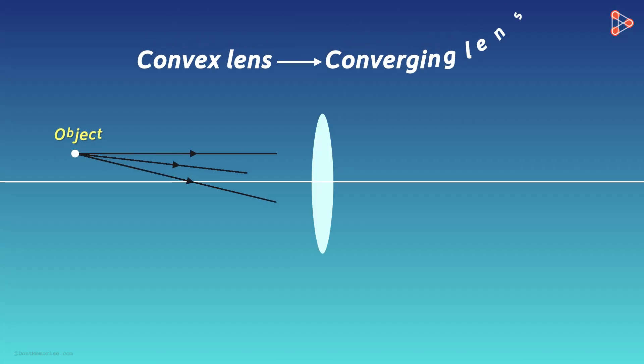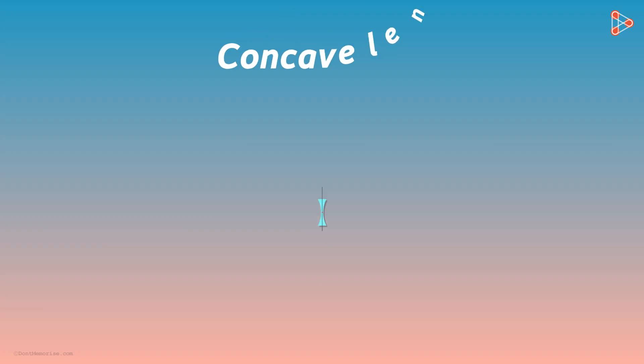In the previous part of this lesson, we've seen why a convex lens is called a converging lens. Now let's discuss the concave lens in detail.